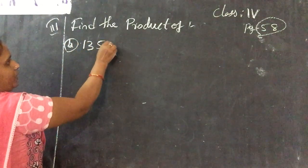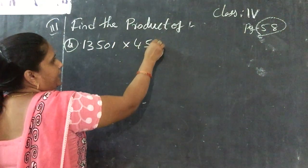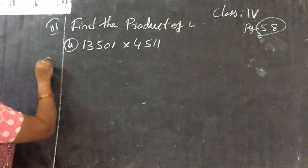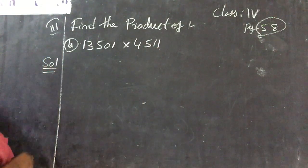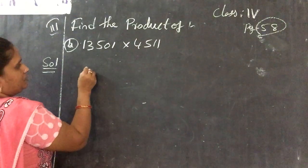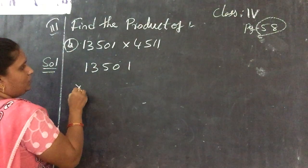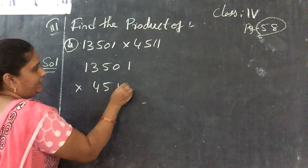First one is very easy one only, so you can do it. I am doing the B1. 13,501 into 4511. So using the regular method only, how to do the sum? Same 13,501 into 4511.